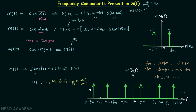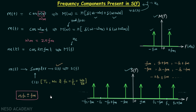We can generalize this: the frequency components present in the Fourier transform of the sampled signal are equal to N·fs ± fm, where N is an integer. Remember this result — we will use it in the coming lectures. By substituting different integer values of N, you obtain all the different frequency components present in SF.